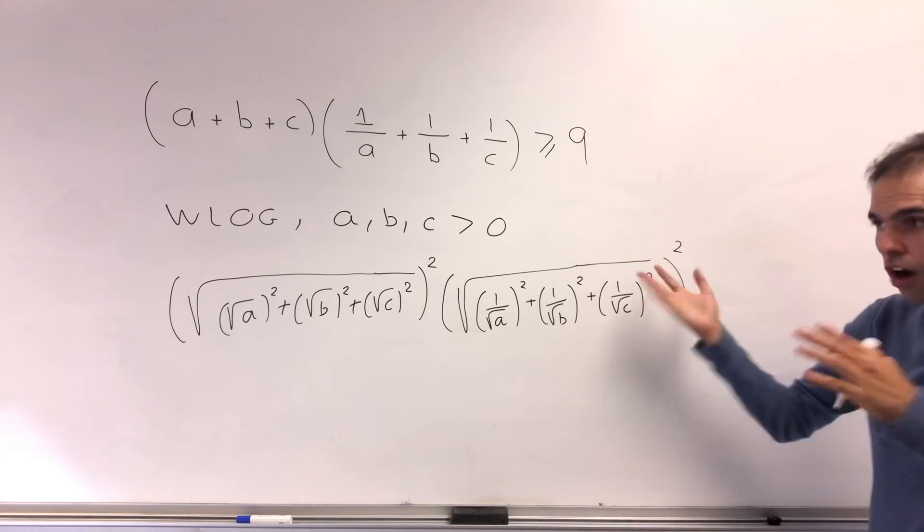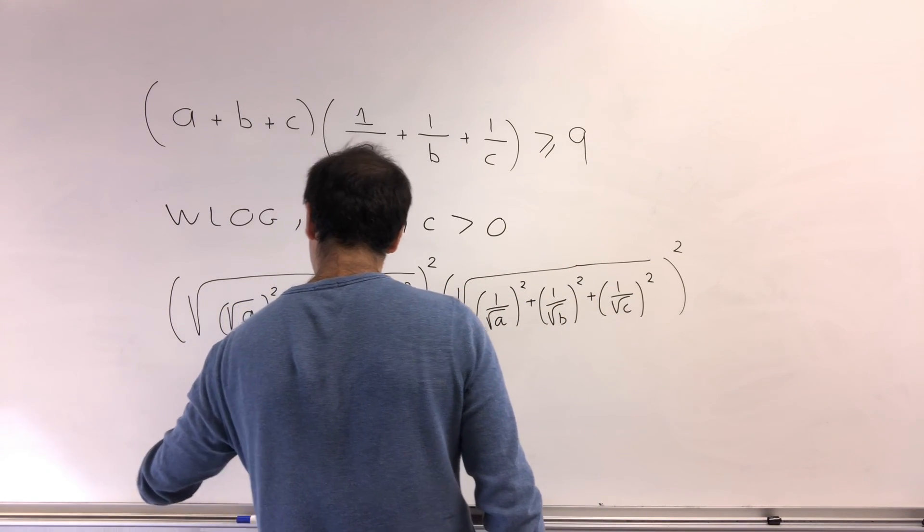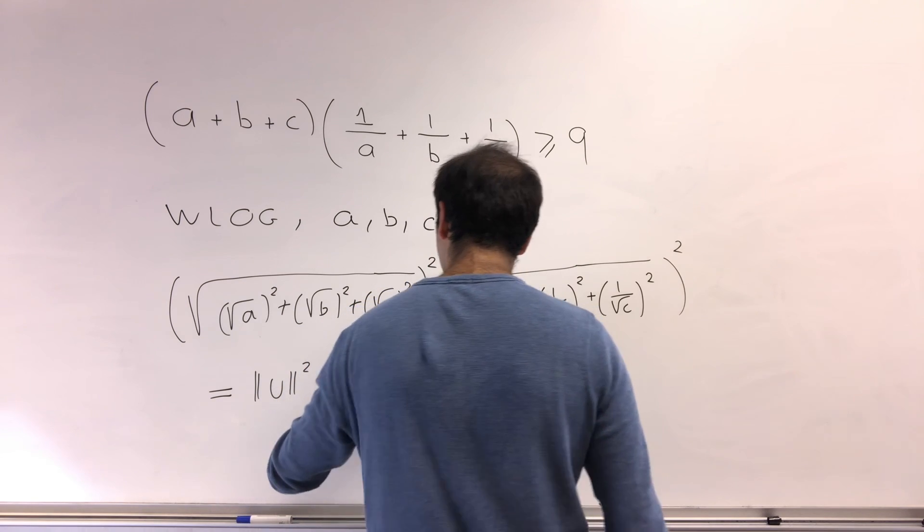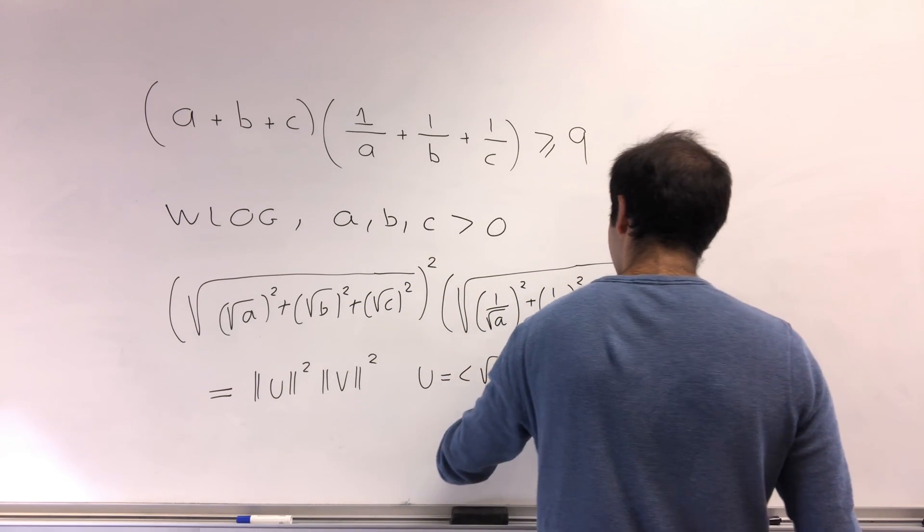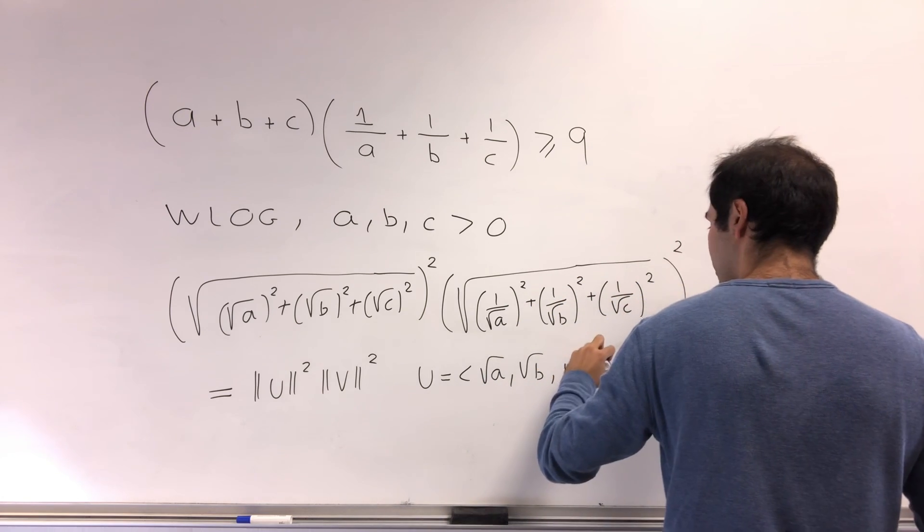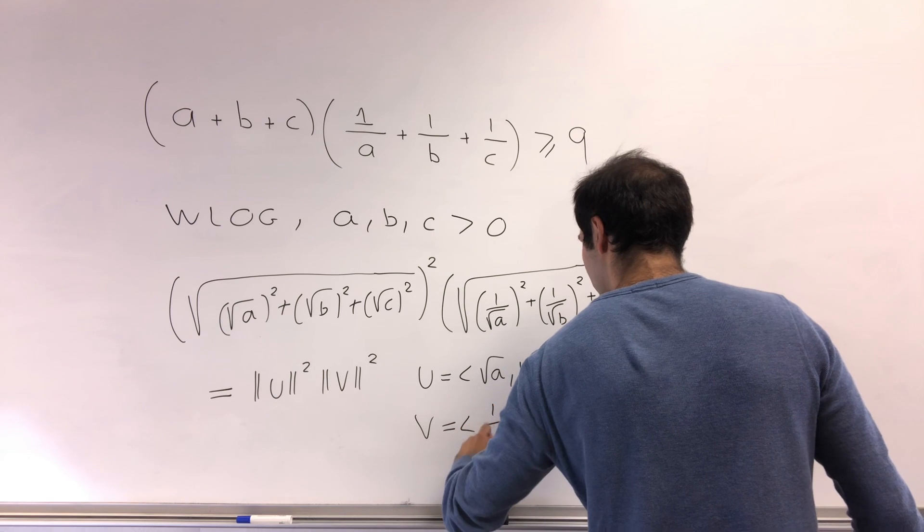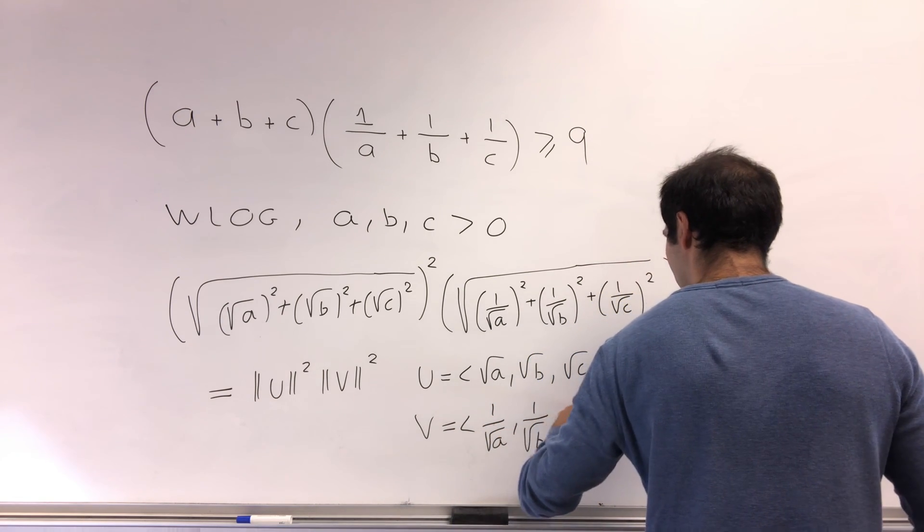So all of this is none other than the length of u squared times the length of v squared, where u is the vector (√a, √b, √c), and v is the vector (1/√a, 1/√b, 1/√c).